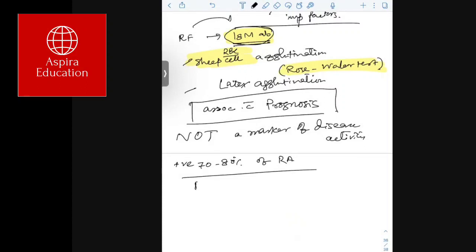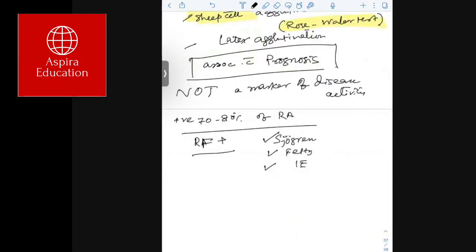Rheumatoid factor is positive in 70 to 80 percent of RA. Apart from RA, there are other conditions where rheumatoid factor may be positive. Rheumatoid factor positivity we can see apart from RA: Sjögren's syndrome, here almost all the cases can have RA positive. We can have Felty's syndrome, which is basically neutropenia, rheumatoid arthritis, and splenomegaly. Infective endocarditis, it can also be present there. SLE also, up to 30 percent of cases.